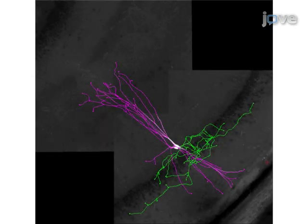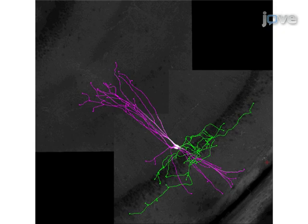Then reconstruct the imaged interneuron in three dimensions, incorporating the dendritic and axonal arborizations.